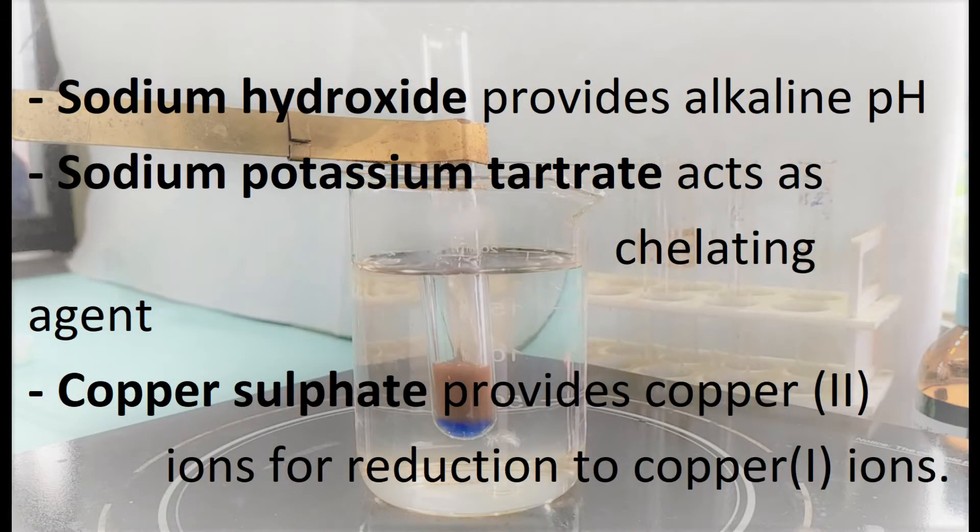Sodium hydroxide provides the alkaline conditions which are required for the redox reaction to occur between the reagent and the reducing sugar contained in the test sample. Sodium-potassium tartrate acts as chelating agent and complexes with the cupric ions of copper sulfate, so that they do not deteriorate to cuprous ions during storage.